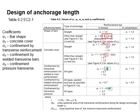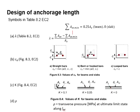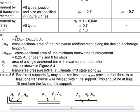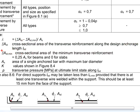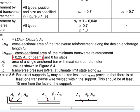The equations for these alpha coefficients are given in the diagram. Some unknowns are referenced, including CD, K, lambda, and rho. Lambda is given by a specific equation, where σAst is the cross-sectional area of the transverse reinforcement along the design anchorage length, and σAst,min is the cross-sectional area of the minimum transverse reinforcement. For a beam, this is assumed as 0.25 times As of the beam, and for a slab, it is considered as 0.